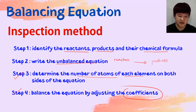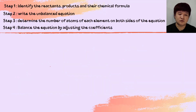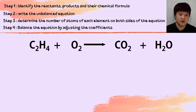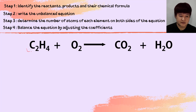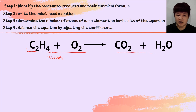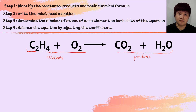Let's look at the first example: C₂H₄ + O₂ → CO₂ + H₂O. The reactant is C₂H₄ and O₂, and the products are CO₂ and water, which are after the arrow. We have already identified the reactants and products and have their chemical formulas written. The unbalanced equation is already given, so we focus only on steps three and four.